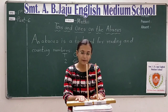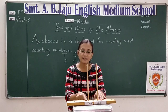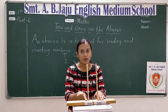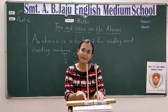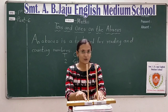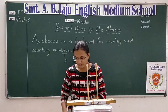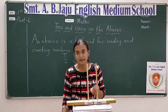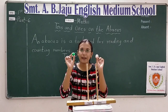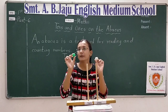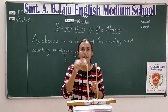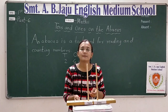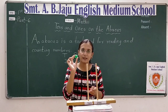Toh ab hum yahan pe ones place ka rod aur tens place ka rod dono mein kuch beads daalenge. Aur uske se kya karenge? Numbers read karenge. Two digit numbers. These are beads — abacus ke beads. Aur hum ones place ke liye white beads use karenge. Aur tens place ke liye green beads use karenge.